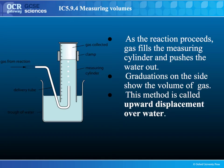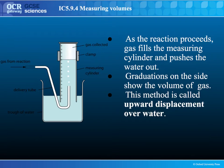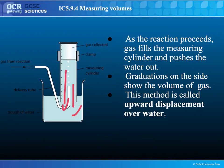The second method is upward displacement over water, sometimes called the downward displacement of water. The gas goes down a delivery tube and is bubbled into a column of water. The gas then collects at the top of that column, pushing the water down out of the way. The main problem with this method is that some gases are quite soluble in water. If the gas is soluble, not all of it will be collected as bubbles because a lot of it will have dissolved in the water instead.